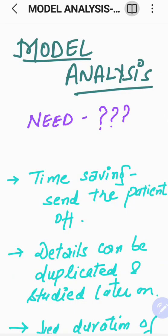Before going deep into model analysis, first we need to know what a model is. Whenever a patient visits us, there are certain diagnostic records we maintain — radiographic records, photographic records, impressions, and study casts. When we make study models, we use them for treatment planning, later purposes, and record maintenance. We analyze them to find tooth length, tooth size, and arch length discrepancies depending upon the different types of analysis done. That is basically model analysis.